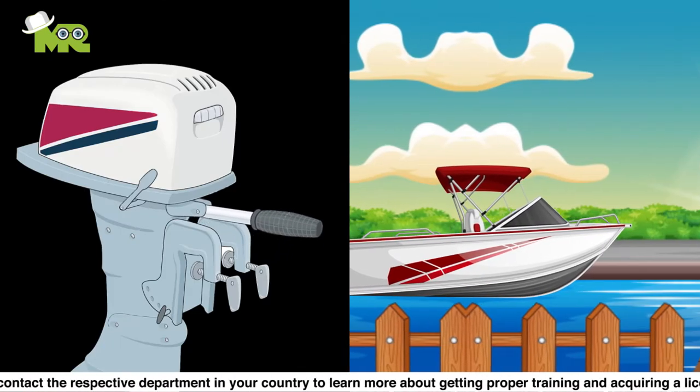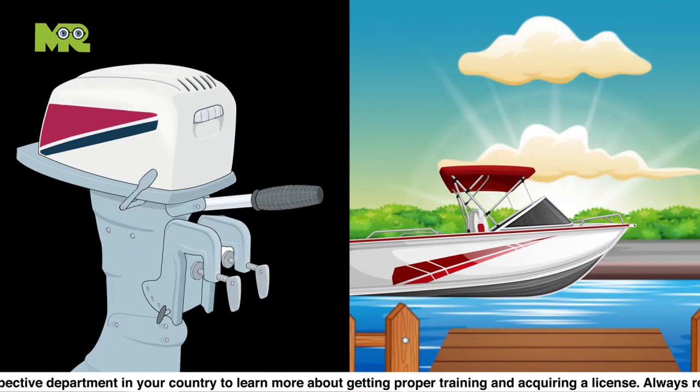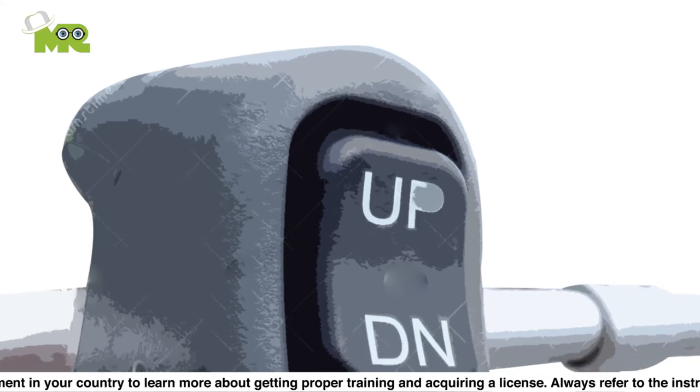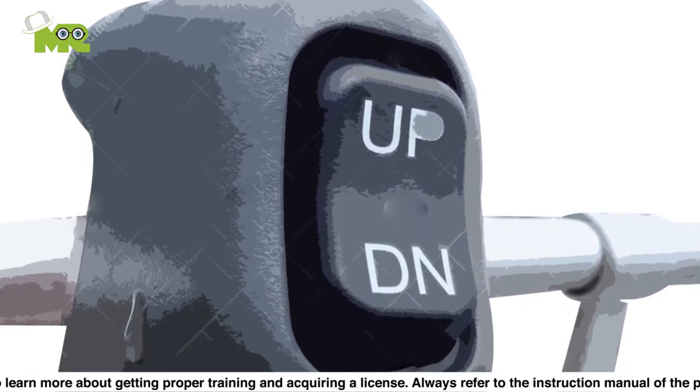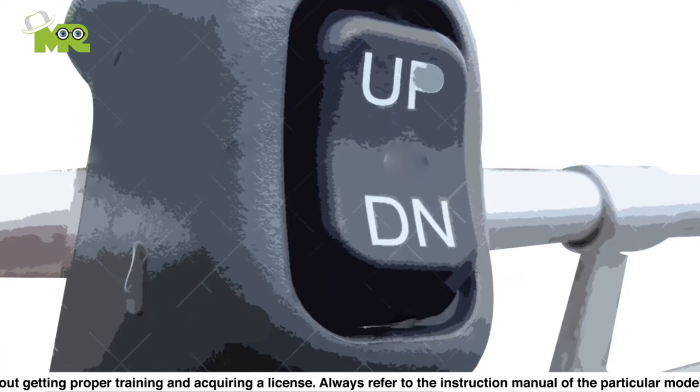Step 11. Slowly advance your throttle by pushing it to reach the appropriate speed. Step 12. To adjust the running attitude of your boat, you can trim it using the trim button on the dashboard by moving it either up or down.